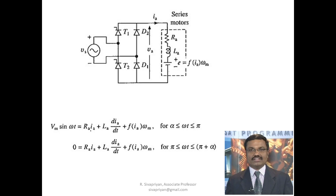In the separately excited DC motor, the flux φ is constant. But here the field winding is connected in series, so the flux produced is directly proportional to Ia. Therefore E is directly proportional to Ia and ωm. That is why in a series motor E is variable, whereas in a separately excited DC motor E is constant.